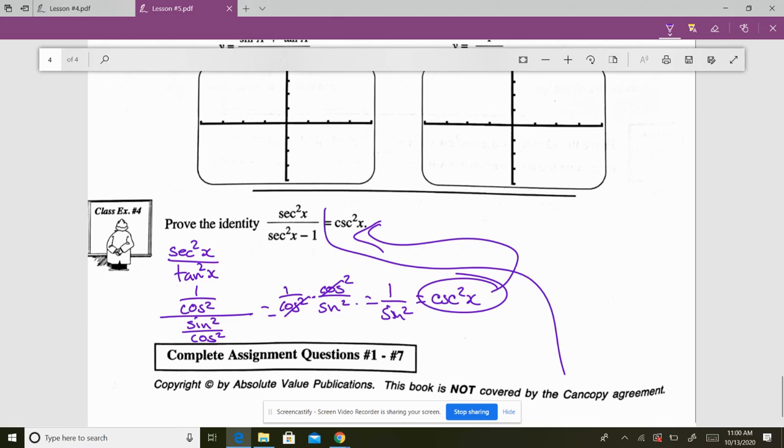So make everything sine and cosine, if that's your default. Start with the more complex side. If there's fractions, you've got to make a common denominator and put them together. If it's fraction over fraction, you've got to flip and multiply, and don't forget to factor.